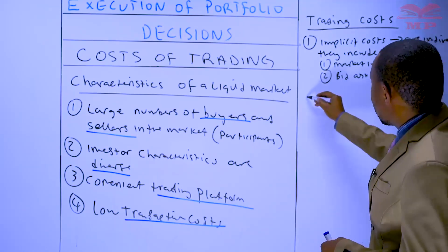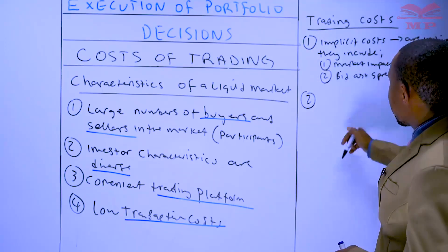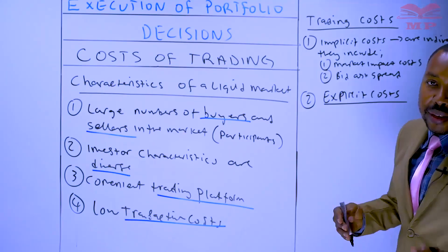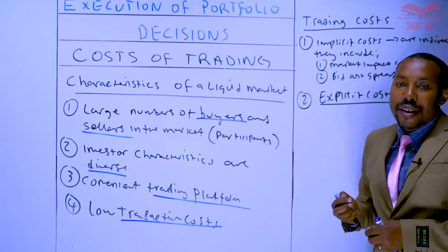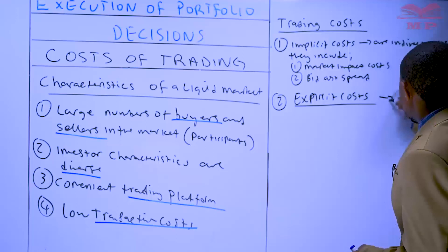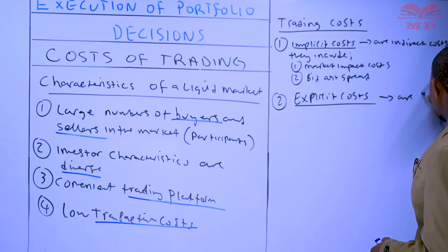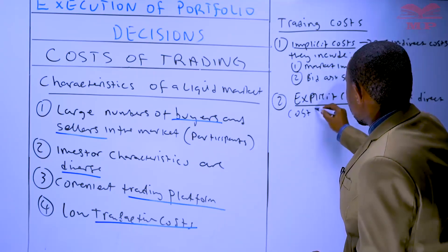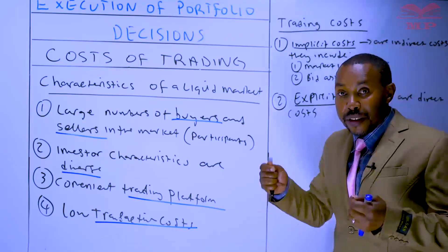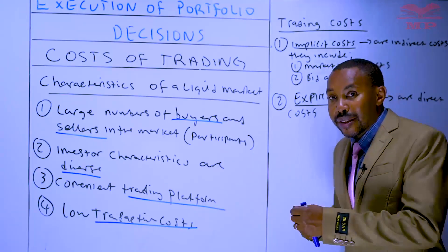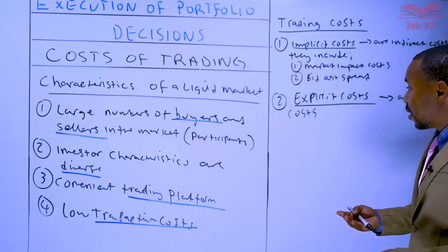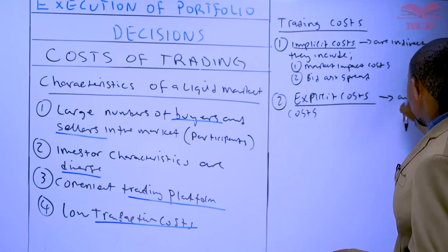The other type of costs is number two — explicit costs. Explicit costs are direct costs of trading, such as brokerage commission, stamp duty, and the rest. These are direct costs, and they are readily discernible. When you buy a security, they are direct — you are charged a commission, you are charged fees, amongst other things to facilitate the trade to be executed. They are direct costs.